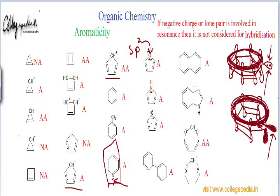If the molecule is planar and has 4n pi electrons, then the molecule is anti-aromatic. If the molecule is not planar at all, it is non-aromatic. And if the molecule is planar but neither has 4n+2 pi electrons nor 4n pi electrons, then the molecule is also non-aromatic. This is how we have learned to find aromaticity.